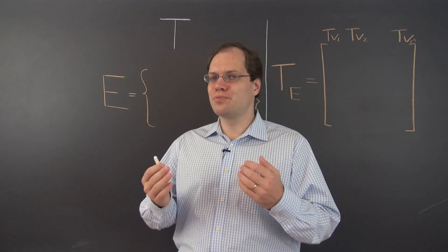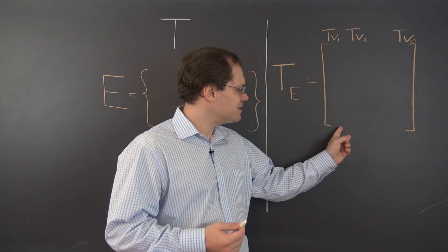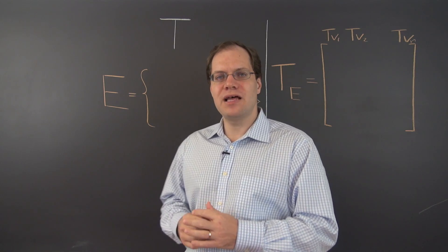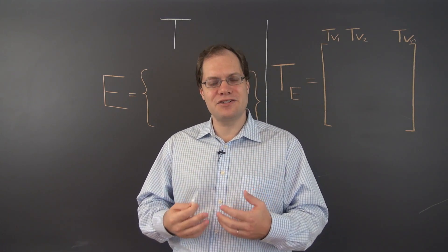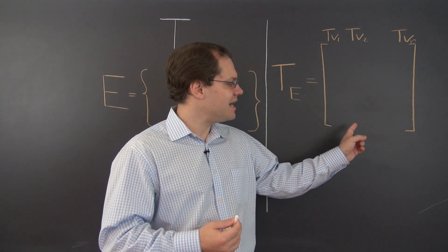In this video we will show or prove that when a linear transformation is represented in the component space with respect to an eigenbasis, that is a basis consisting of a full set of eigenvectors of the linear transformation, the resulting matrix is diagonal.